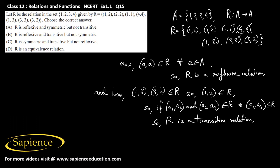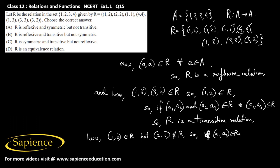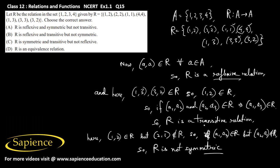Now checking symmetry: (1,2) belongs to R but (2,1) does not, and (1,3) belongs to R but (3,1) does not. Since (a1,a2) belongs to R but (a2,a1) does not, R is not a symmetric relation. Therefore, R is reflexive and transitive but not symmetric, making option B the correct answer.